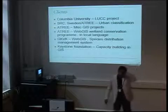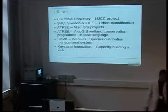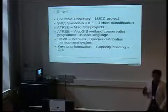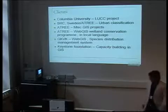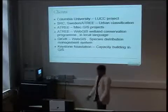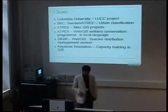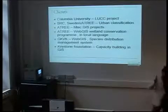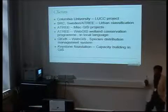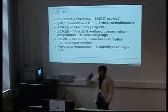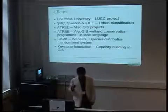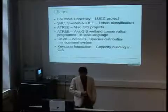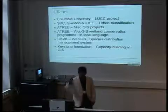Our clients include Columbia University for a land use land cover project with ten sites of interest in India — they use Landsat, ASTER, and other imagery and we do that processing for them. We also work with Stockholm Resilience Center in Sweden and A3 as a collaboration for urban classification for ten different cities in the world, starting with Bangalore. And as a consultancy for A3, I do miscellaneous GIS projects like fire mapping and livelihood projects.